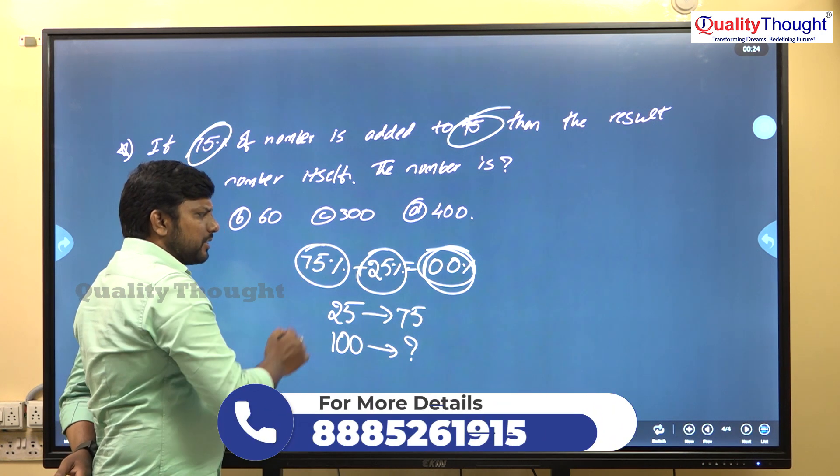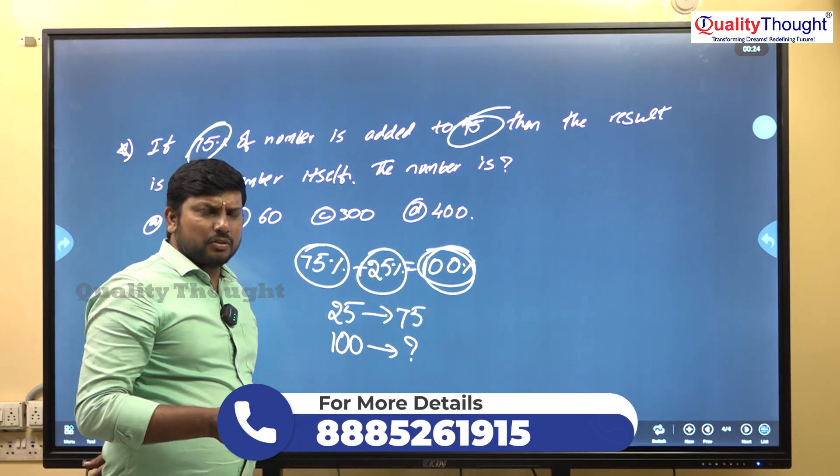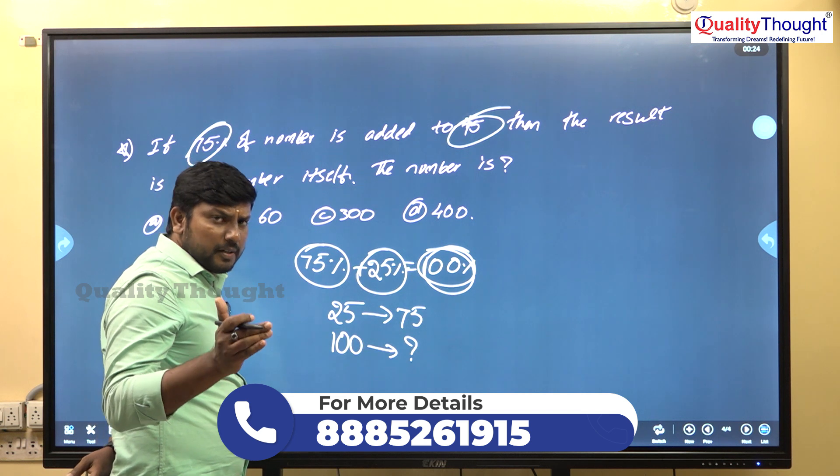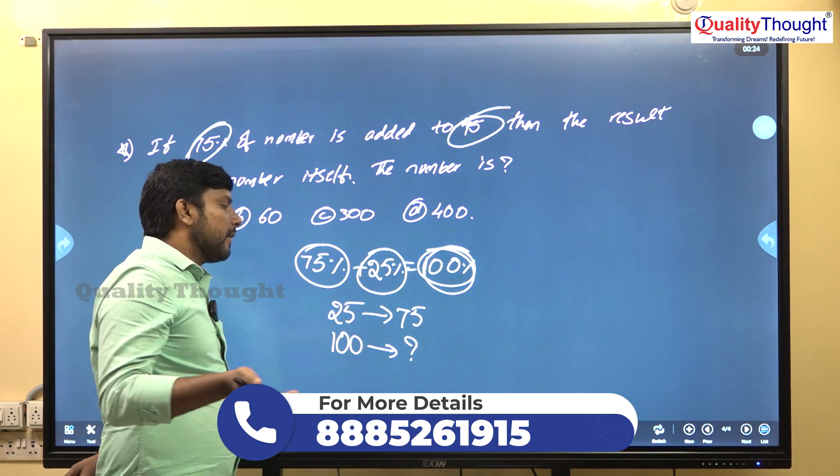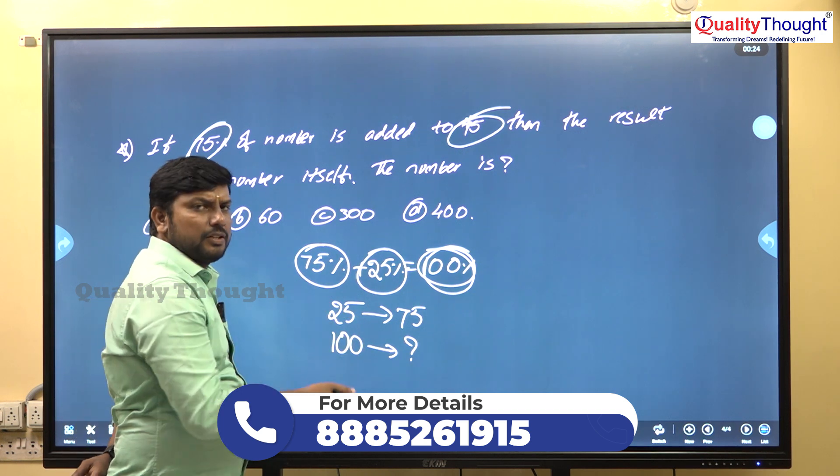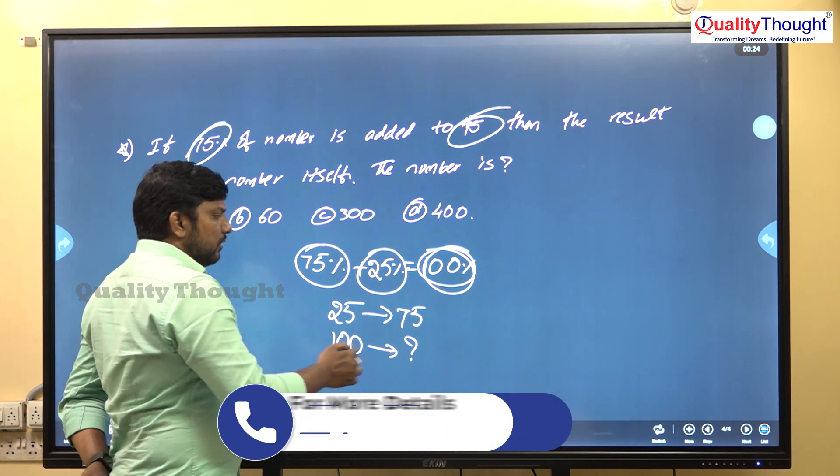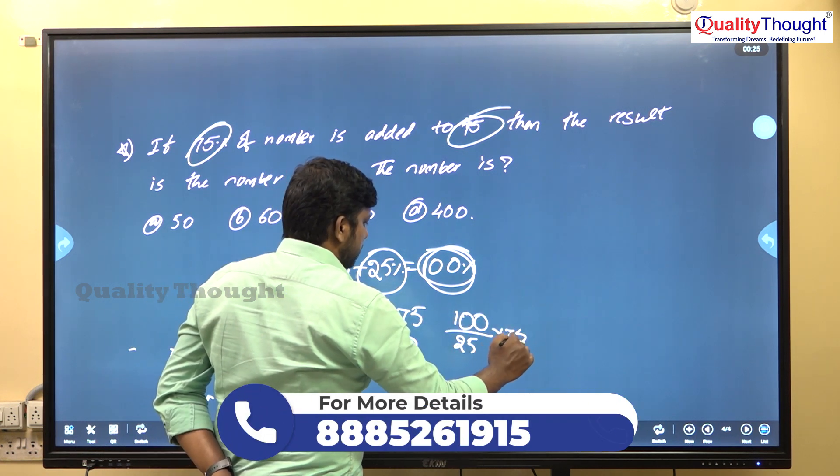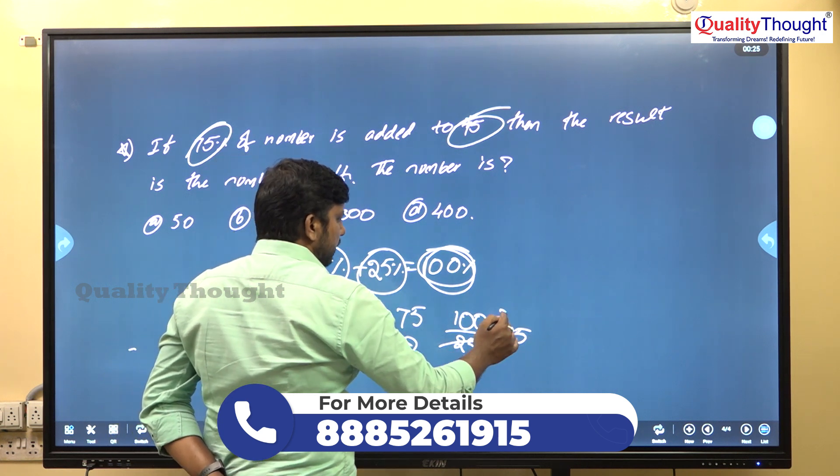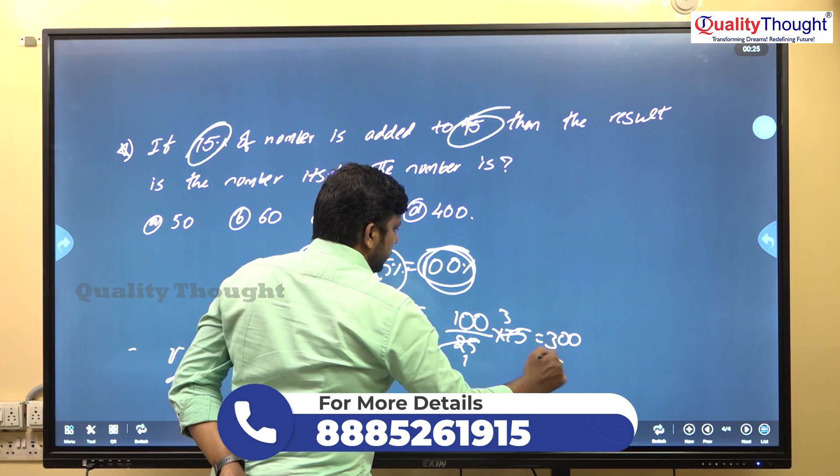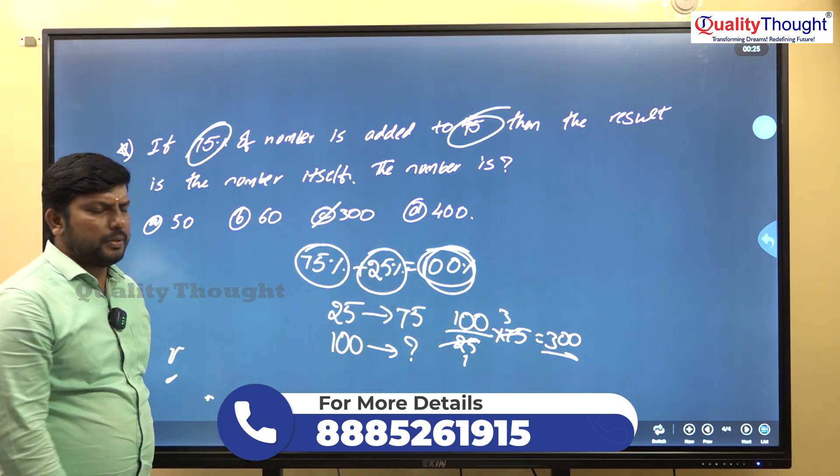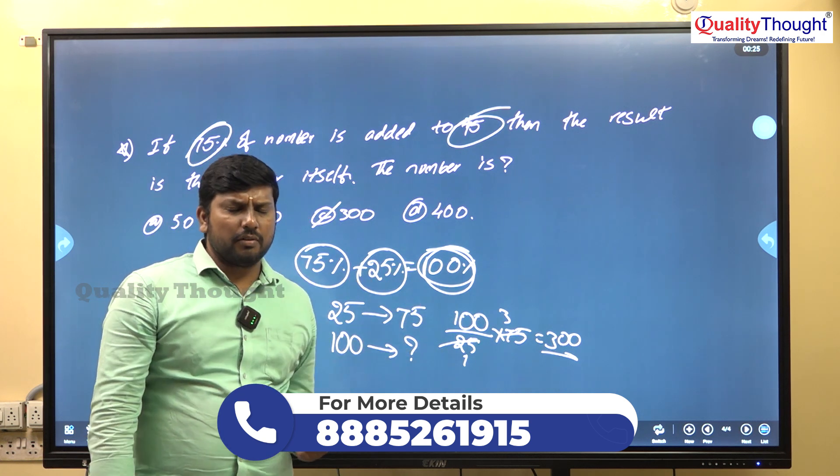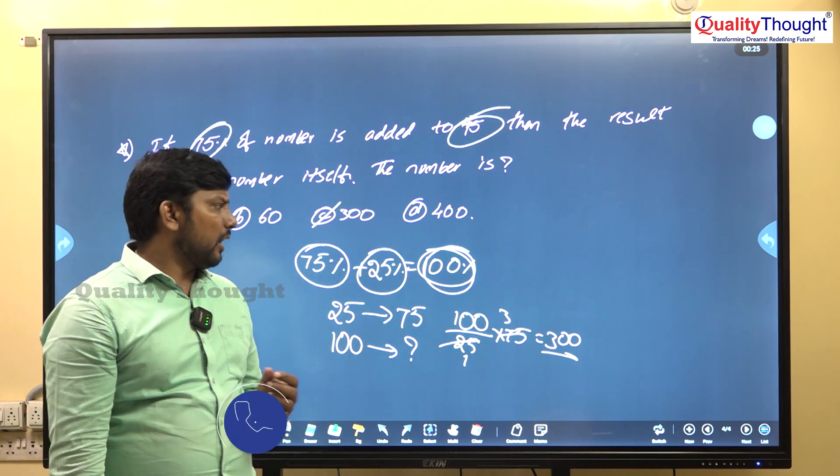Notice they gave 75 percent and 75 - repeated numbers again. So 25 percent of a number is 75 rupees. Then 100 percent will be? We can directly calculate. 100 by 25 into 75. 25 threes, so 3 into 100 is 300 rupees. So the number is 300 rupees. Very simple - we can solve using assumptions without struggling with calculations.